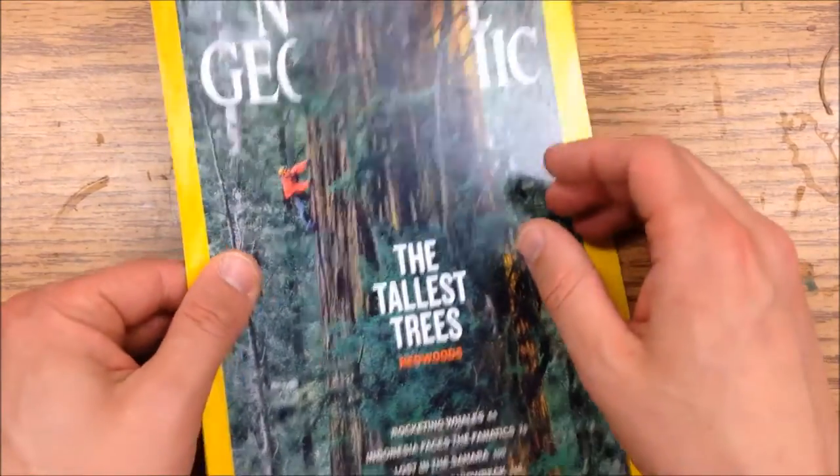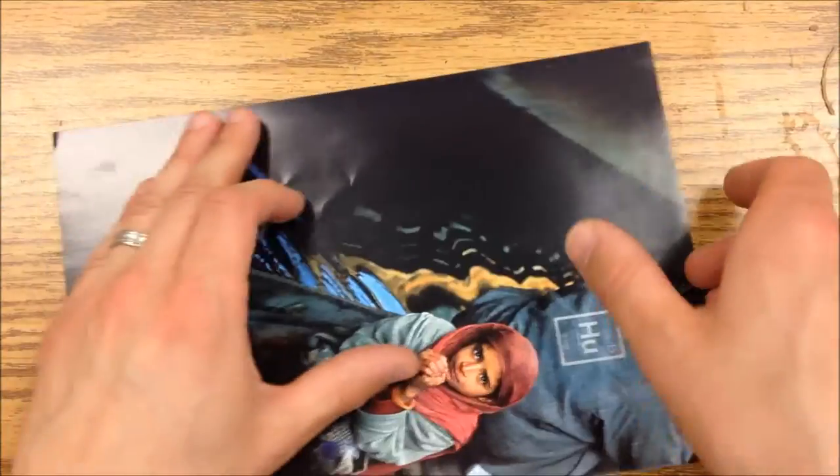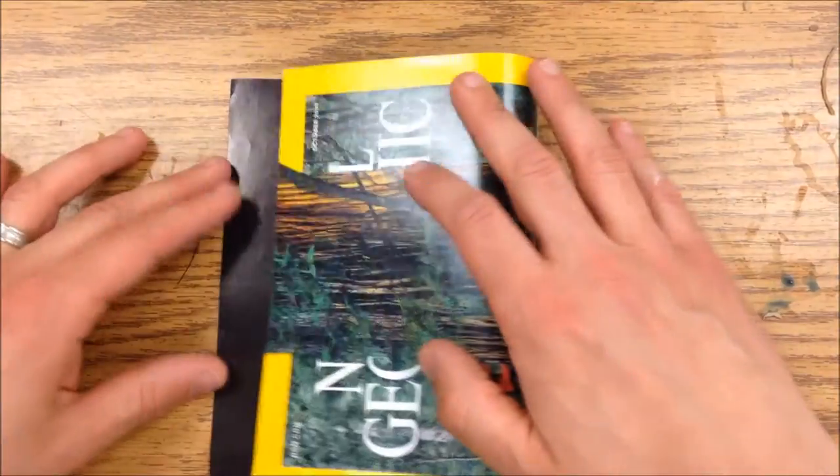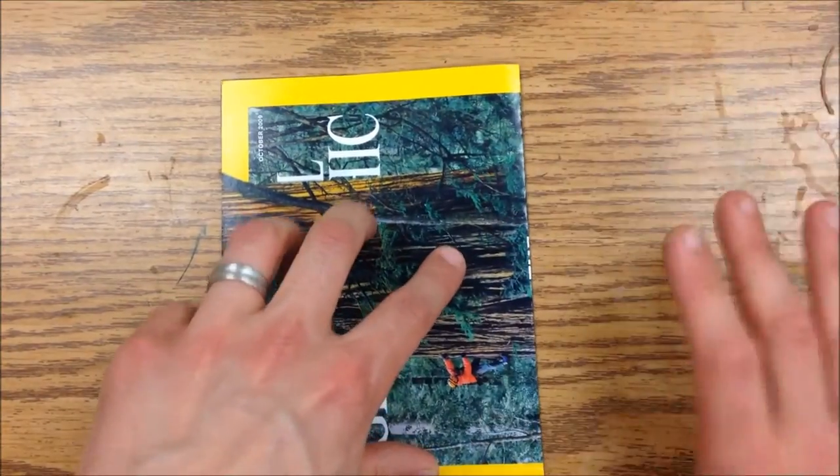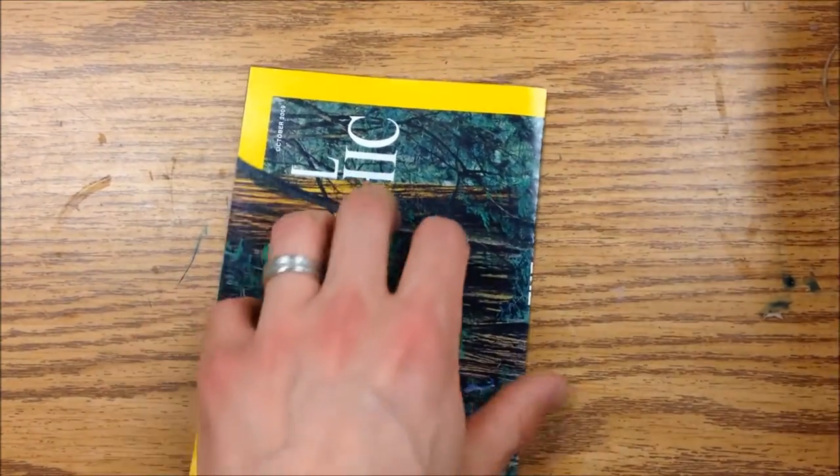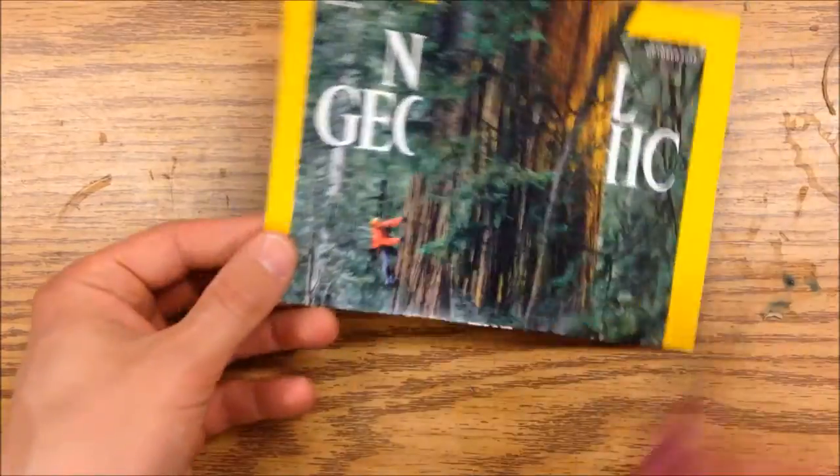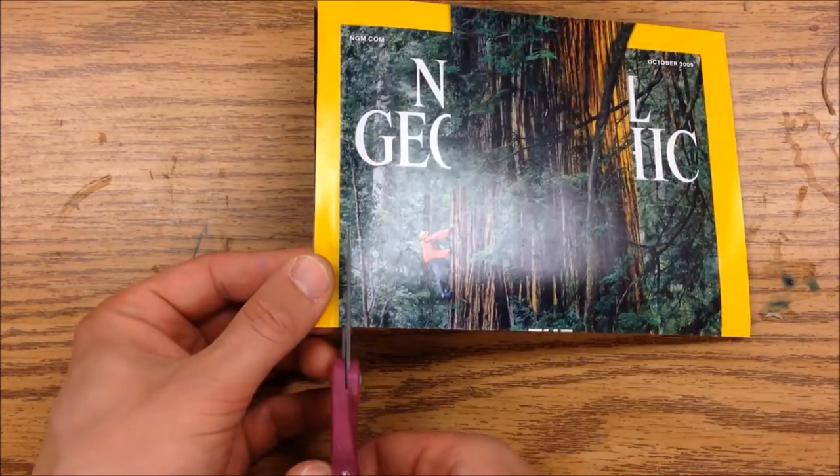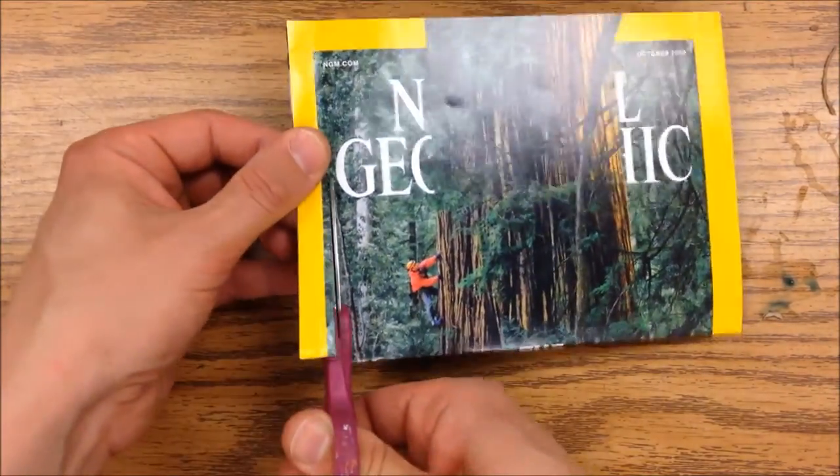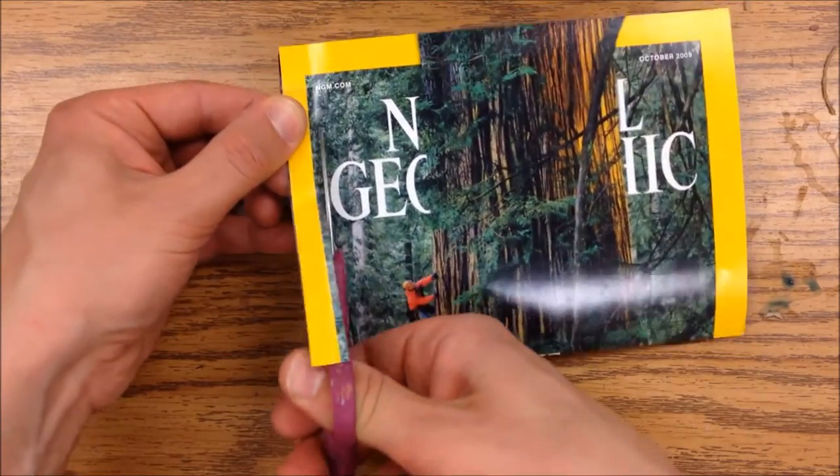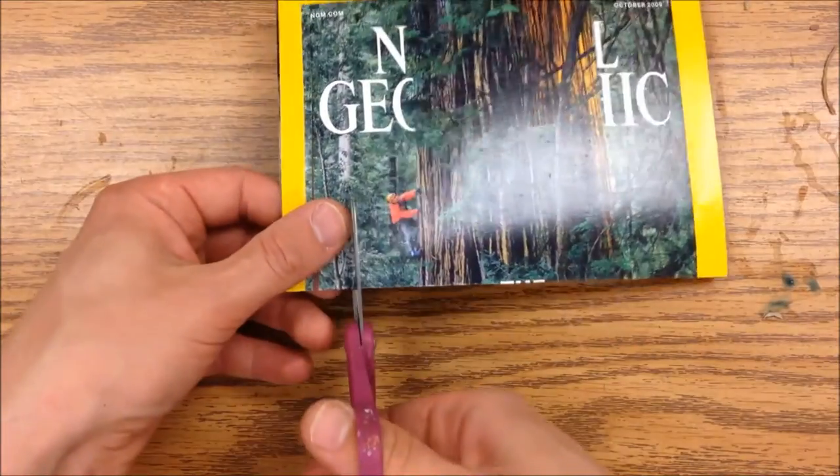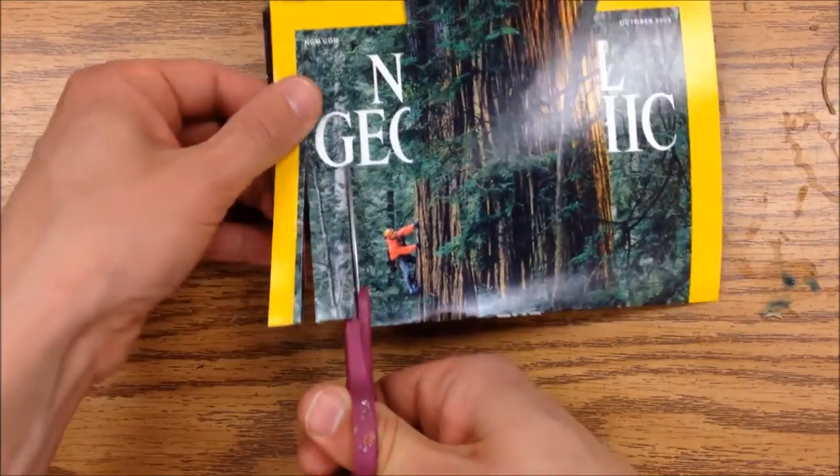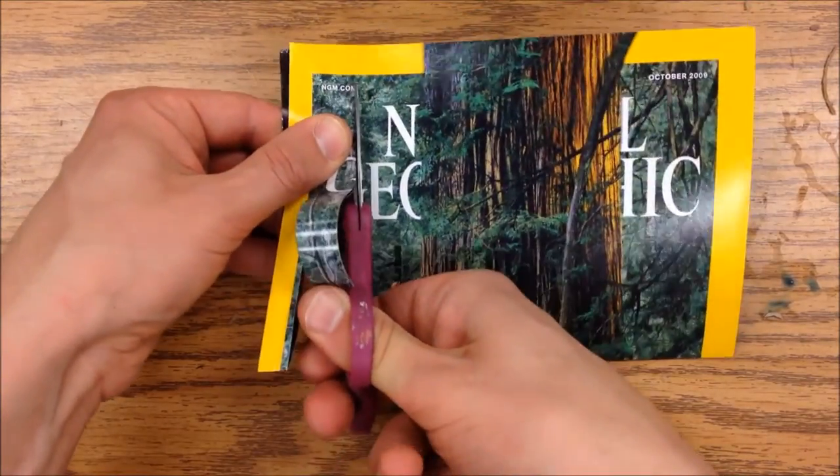Start by taking your paper and fold it in half. Take a pair of scissors and cut half inch to one inch strips. Cut almost all the way up to the top.